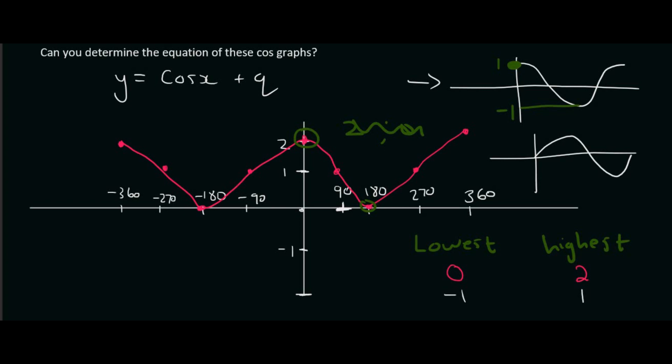So what have they done to get from minus 1 to 0? Well, you add 1. And what do you do to get from 1 to 2? You add 1. So this pink graph is a cos graph that has simply been moved up by 1 unit. And so this is the equation of that graph.